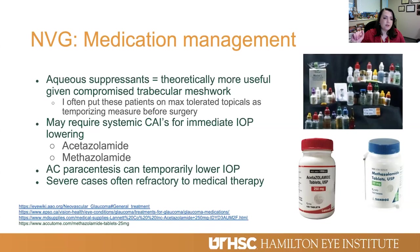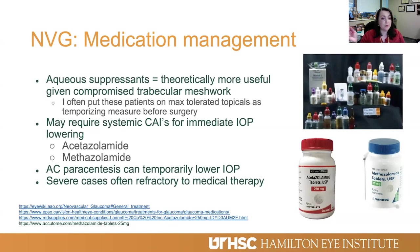If seeing these patients acutely in the emergency room with very high pressure, you give IV Diamox and max topicals. If it's safe to do so, you can perform an anterior chamber paracentesis for immediate pressure lowering, though it can be tenuous in these patients, especially with florid rubiosis — you don't want to nick one of those blood vessels. But if you can safely get a 30-gauge needle into the AC, you can temporize acutely elevated pressure with an AC tap.